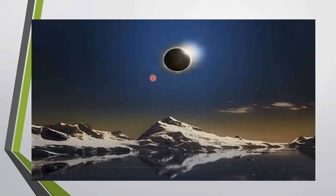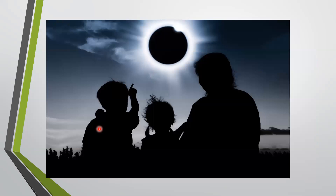The moon is blocking the sun rays which are coming towards the earth. Now these children are looking directly at the sun, and this adult as well. But what will happen? What do you think? What will happen to them? It will damage their eyes, or you can say it can permanently cause blindness.